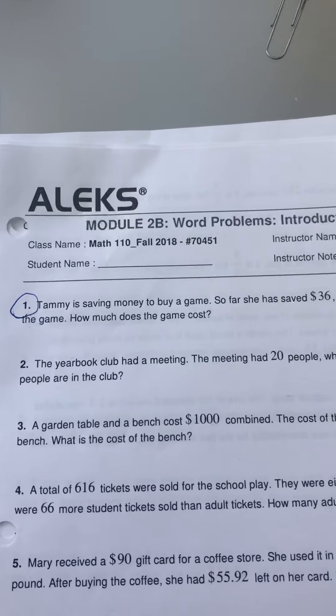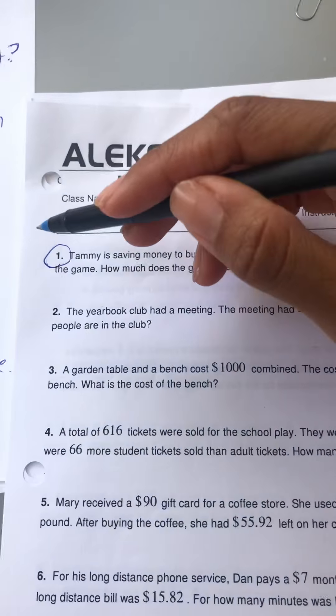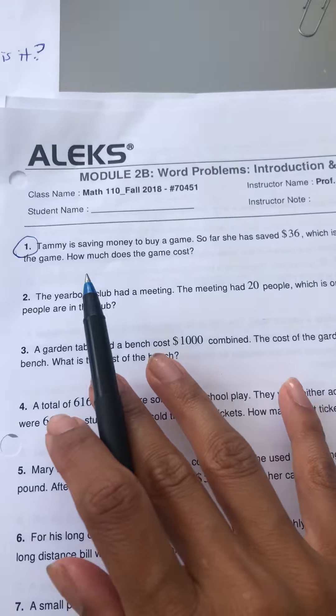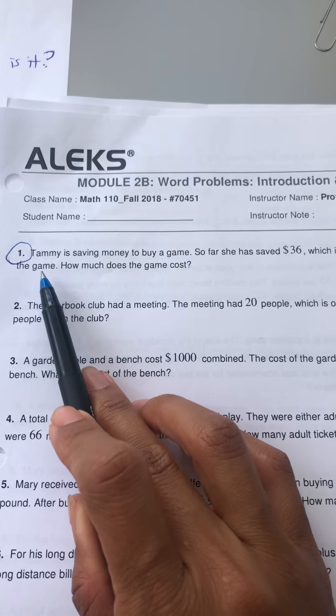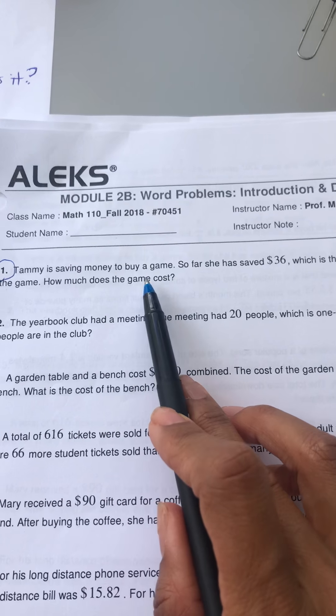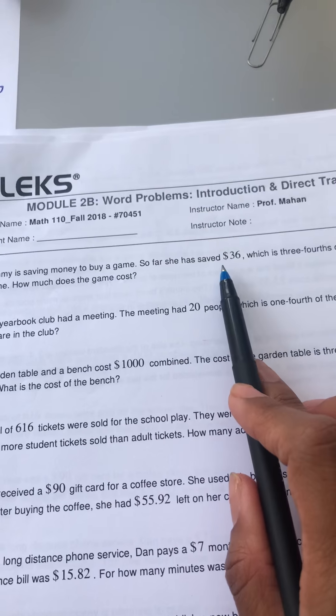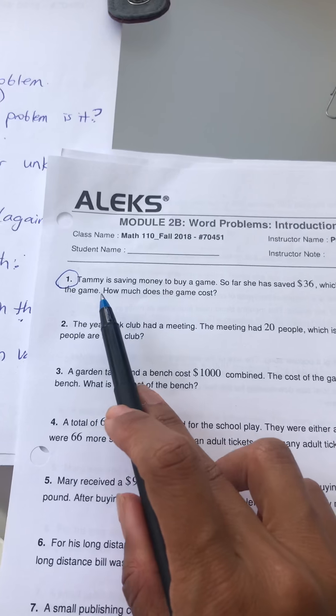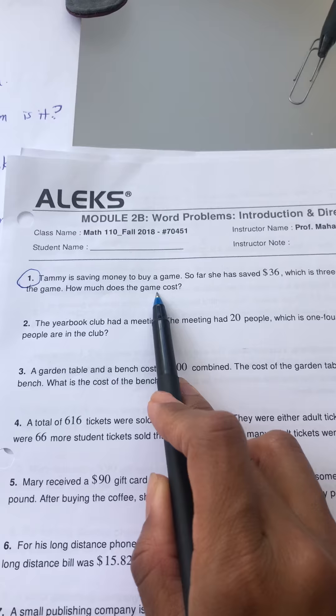So here I'm gonna go over problem number one on our word problem worksheet that you guys should have with you. Tammy is saving money to buy a game. So far she saved $36, which is three-fourths of the total cost of the game. How much does the game cost?